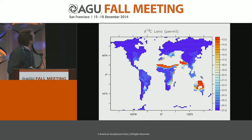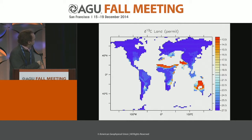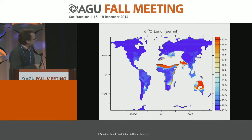The land carbon isotopes have not been published before. The δ13C distribution in the model on land reflects the regions where C4 versus C3 plants occur. I think this is consistent with other estimates of land carbon δ13C distributions.